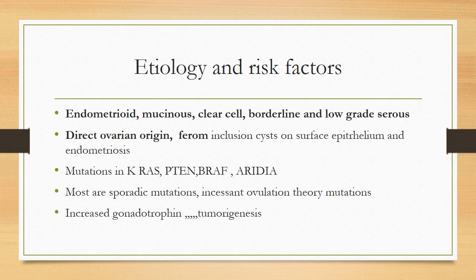The other variety — endometrioid, mucinous, clear cell, borderline, and low-grade serous tumors — have a very distinct origin from the ovaries. They form inclusion cysts on the surface epithelium and arise from those inclusion cysts, or they might arise from endometriosis deposits on the ovaries. It is important to differentiate between high-grade pelvic serous and this variety because they have fairly good prognosis, and the mutations are also different.